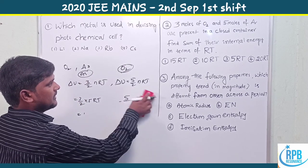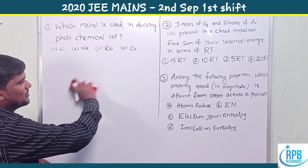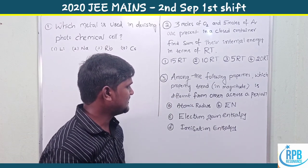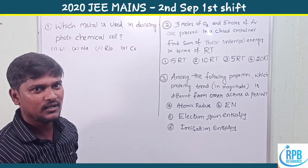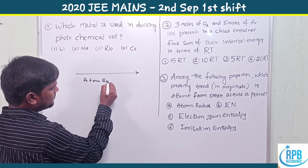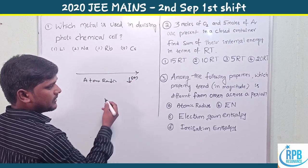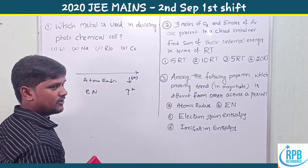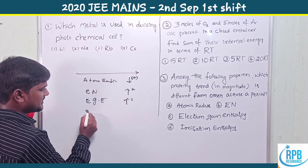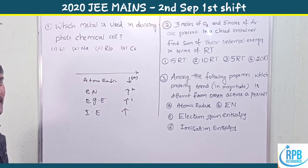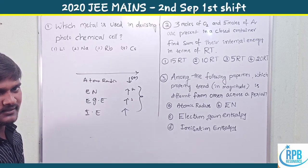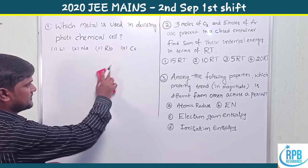So 15RT is the correct option. Question 3: Among the following properties, which trend is different across a period? Across a period: atomic radius decreases, electronegativity increases, electron gain enthalpy increases, and ionization enthalpy increases. Atomic radius is the property with a different trend from the remaining three, so atomic radius is the answer.